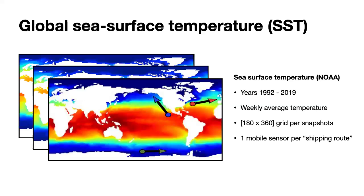We'll start with global sea surface temperature. This dataset is provided by the National Oceanic and Atmospheric Administration and covers 27 years of averaged sea surface temperature taken every single week — averaged over a week for 27 years — providing a snapshot every week at 180 by 360 grid points. What's interesting is this data is quasi-periodic: it has rhythmic periodic behavior but does change year to year and season to season. This was a great dataset to start with because there's a lot of prior research we can compare against.